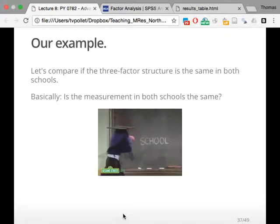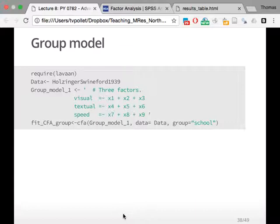In our example, what we're going to try and do is compare the three-factor structure in both schools. I told you that the data we have from these three latent factors are from three schools. The question is, are you measuring the same in school one as in school two? Now we have to call it something differently. I call it a group model now, because we want to compare the groups.